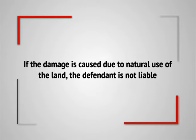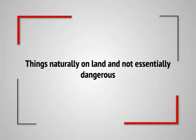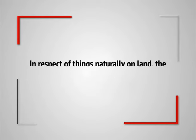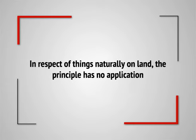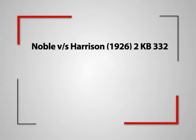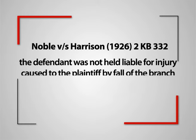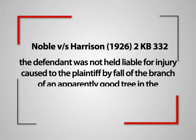For example, as a result of mining operations on one's land, if a neighbor's land is inundated due to gravitational force, no liability attaches. But if this inundation takes place due to pumping, the defendant is liable. In respect of things naturally on land and not essentially dangerous, the principle has no application. For example, in Noble v. Harrison, a case from 1926, the defendant was not held liable for injury caused to the plaintiff by the fall of a branch of an apparently sound tree on the defendant's land.